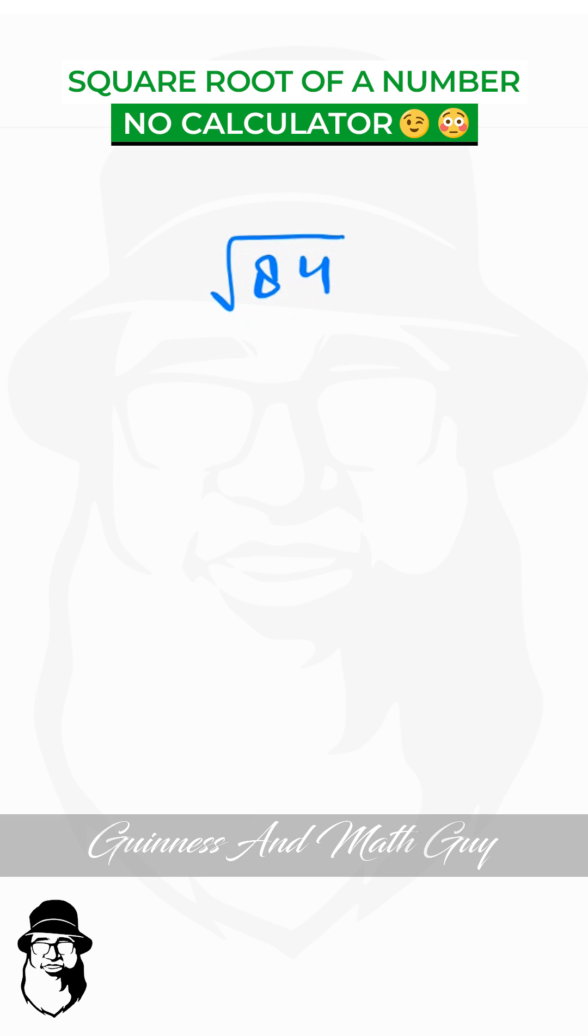When you have a square root like this and it is not a perfect square, then we can see that it is above square root of 81, that is 9, and below square root of 100, that is 10. So it means the answer will be 9 point something.